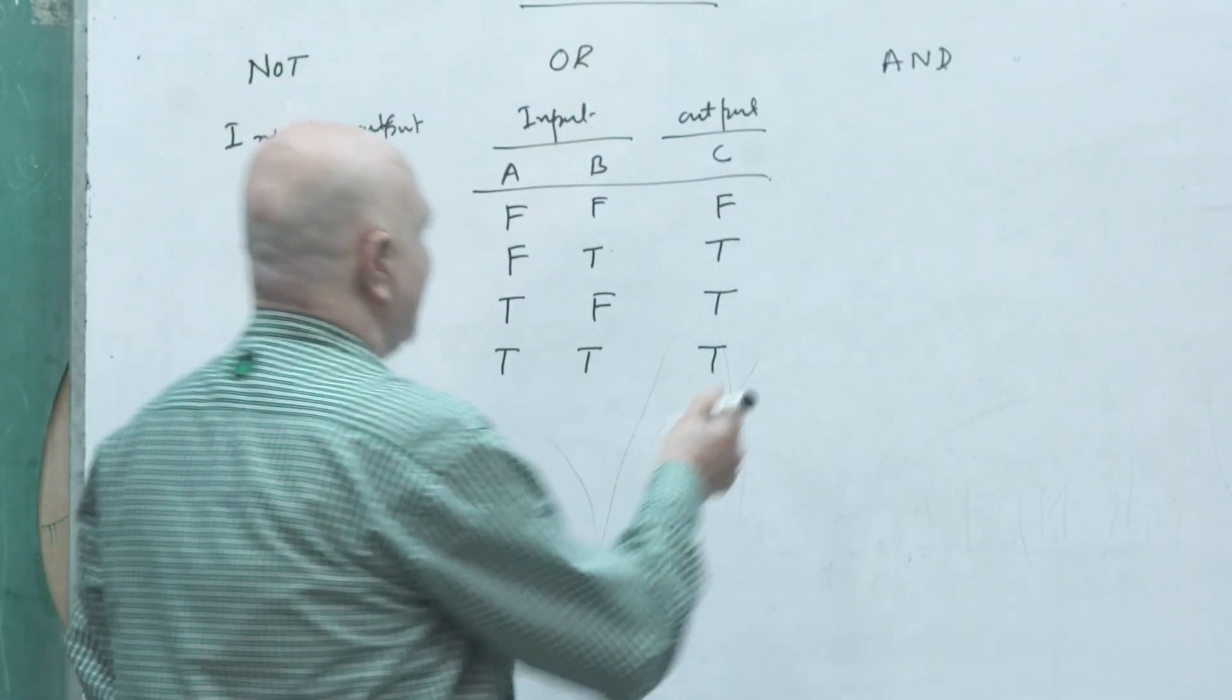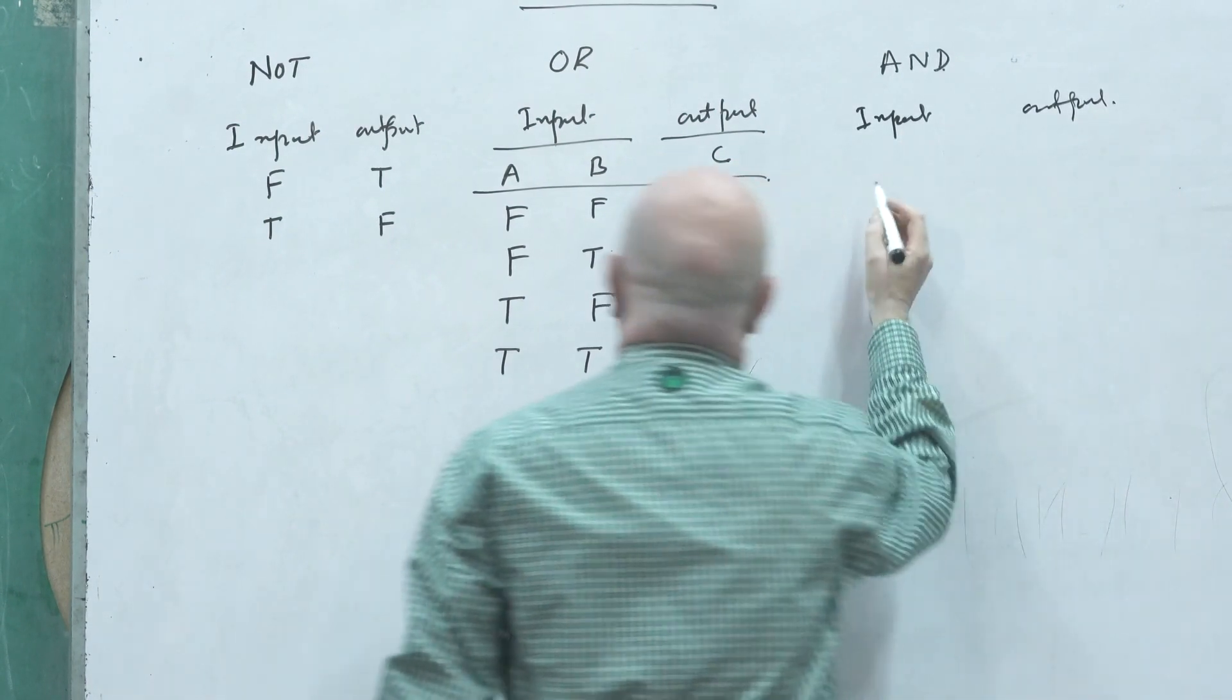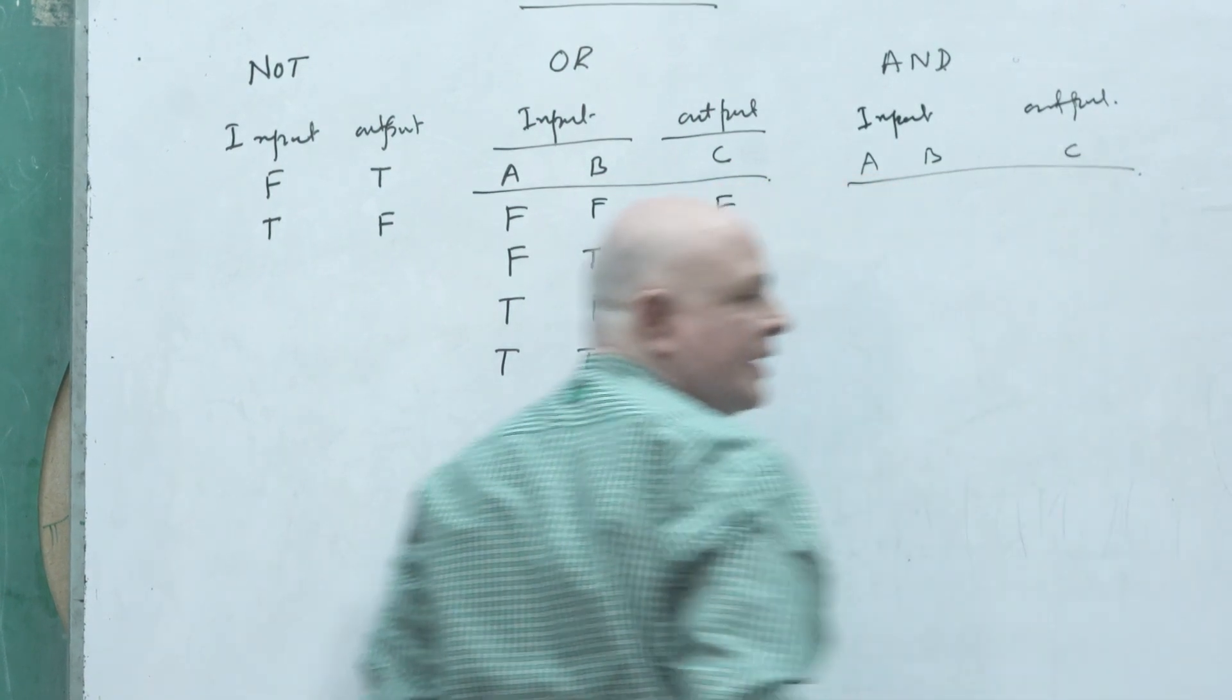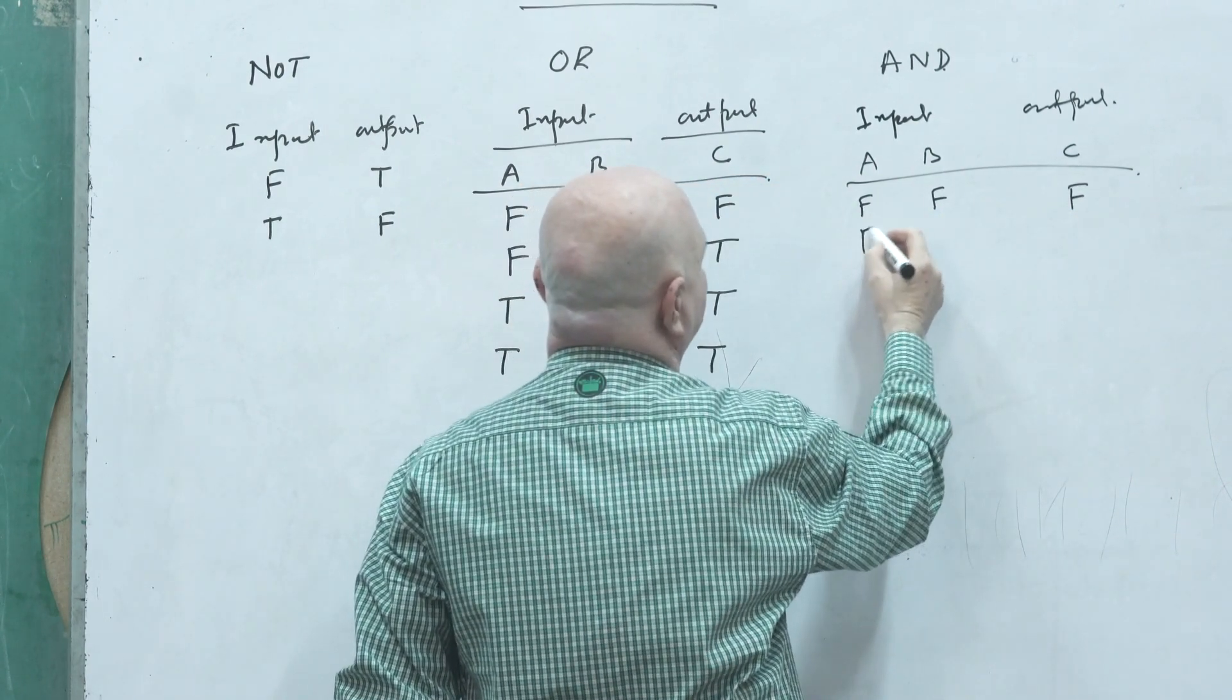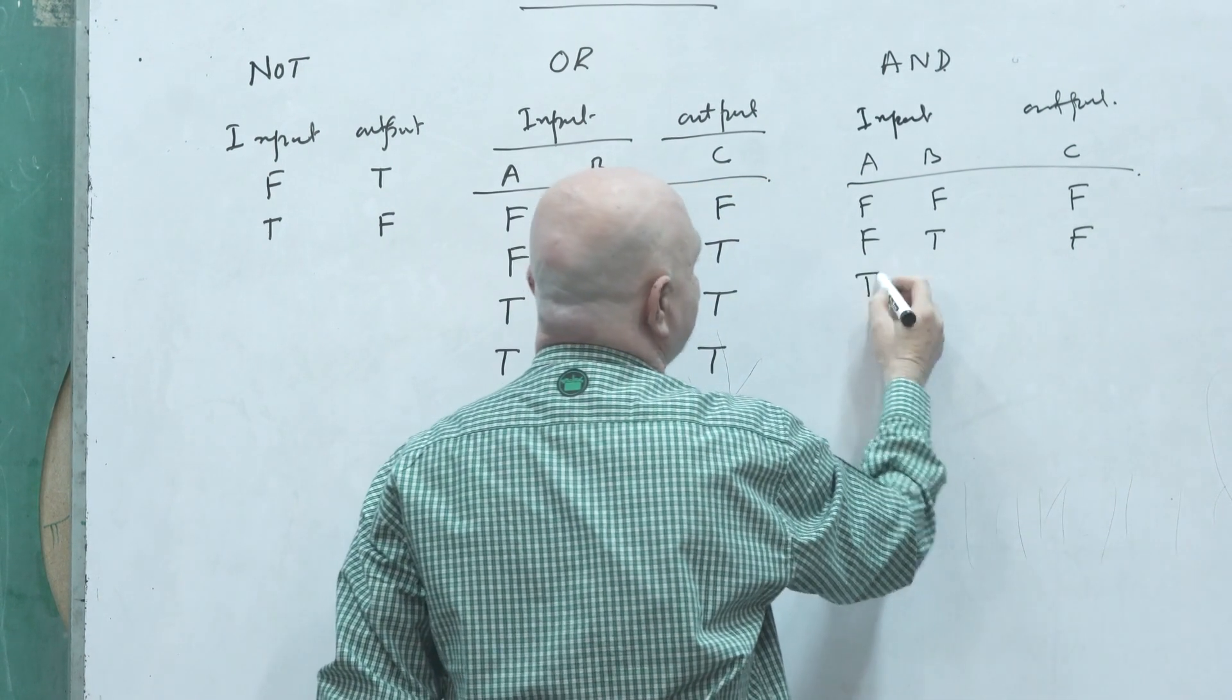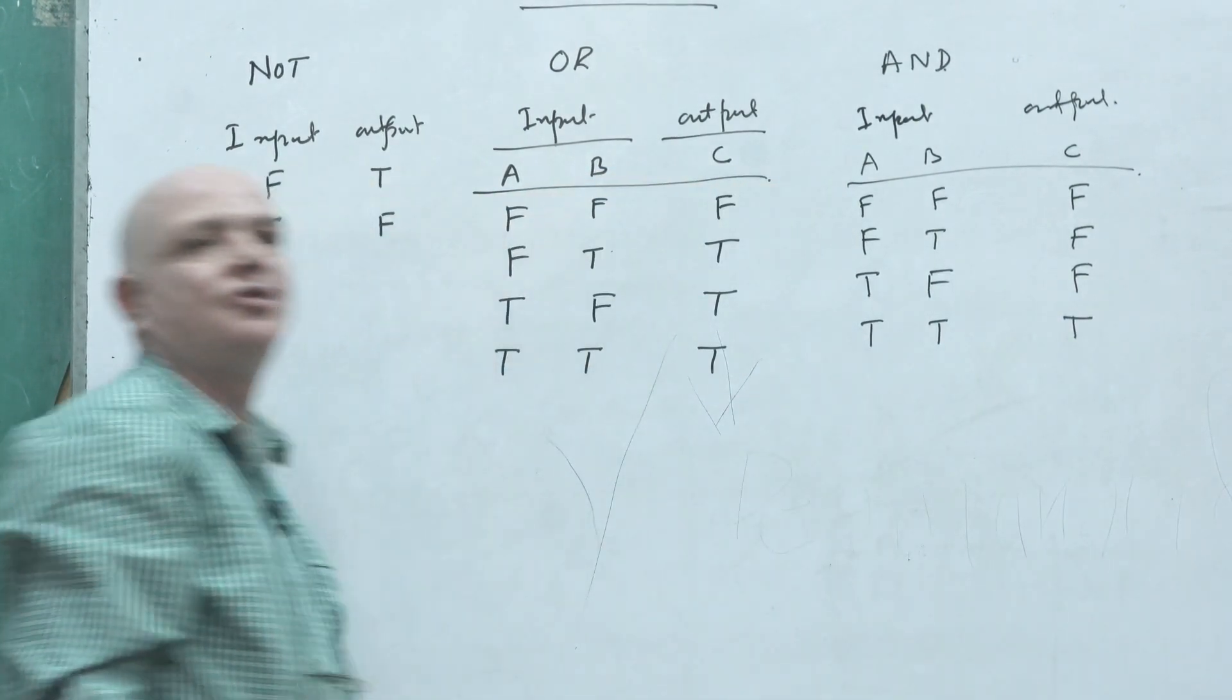So again same, over here input and there is output. So say same, two statements minimum we are giving. It can be false, it can be false, it can be false, the resultant is false. It is true, resultant is true. This is false, resultant will be, if it is true, this is false, resultant will be. If it is true, this is true, resultant will be true.